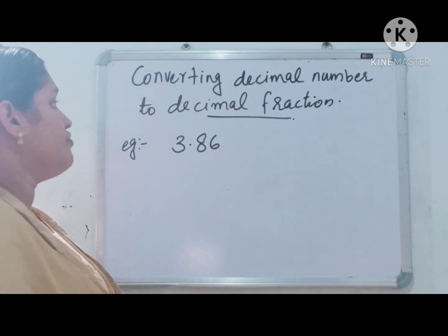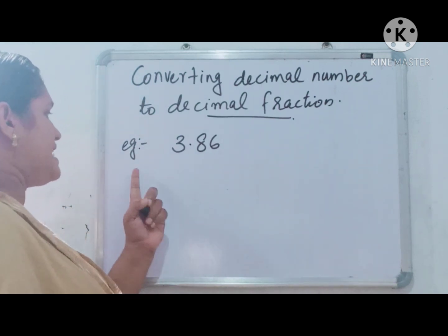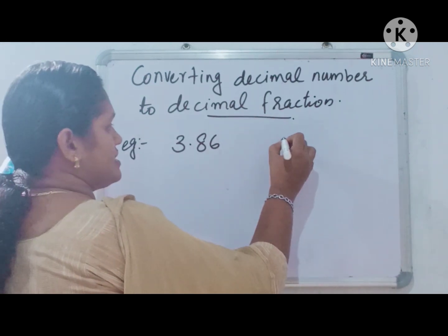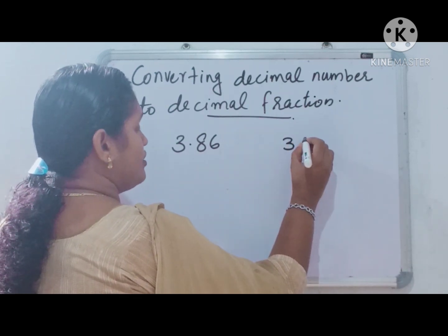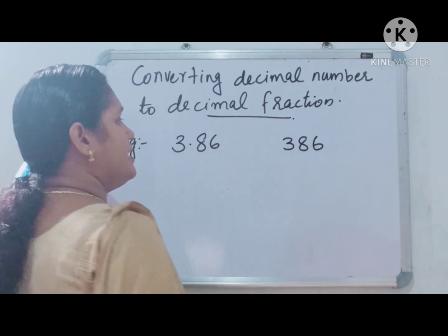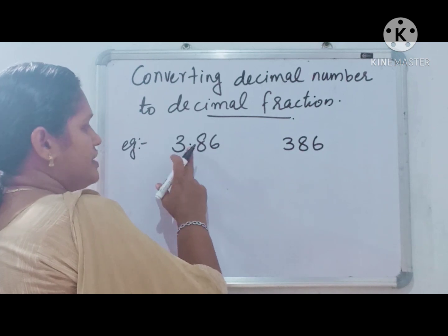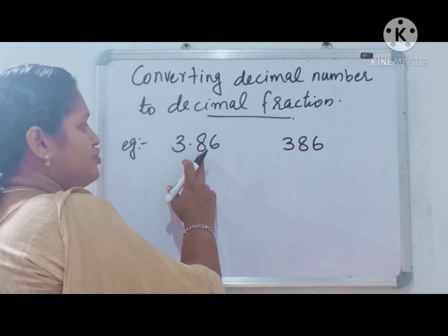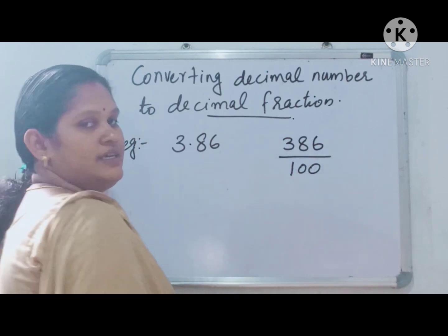Next is converting decimal number to decimal fraction. How do we do that? Example 3.86. We have to write the number as numerator: 386. How many places are here after decimal point? 2 places. So write 2 zeros and 1, which is 100.